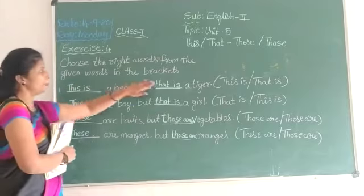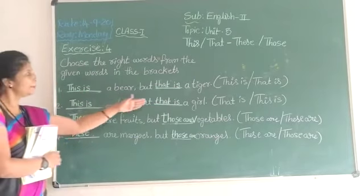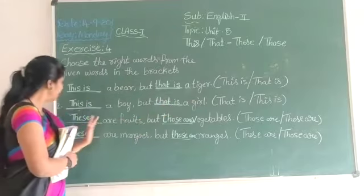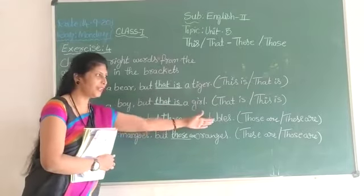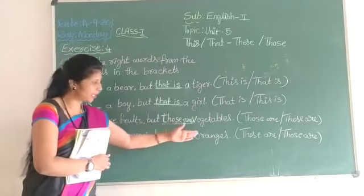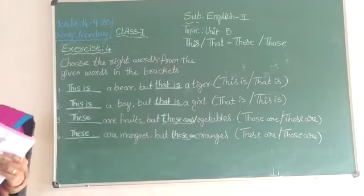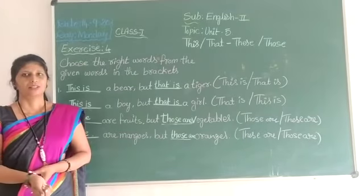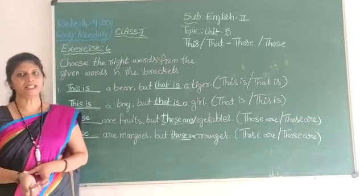This is the bar, but that is a tiger. This is the boy, but that is a girl. These are fruits, but those are vegetables. These are mangoes, but those are oranges. OK children, we will see in the next class.